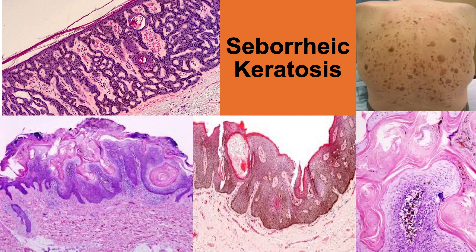Seborrheic keratoses are common, benign, pigmented, predominantly basal keratinocytic proliferations occurring chiefly on the trunk of adults. They may be single or multiple.